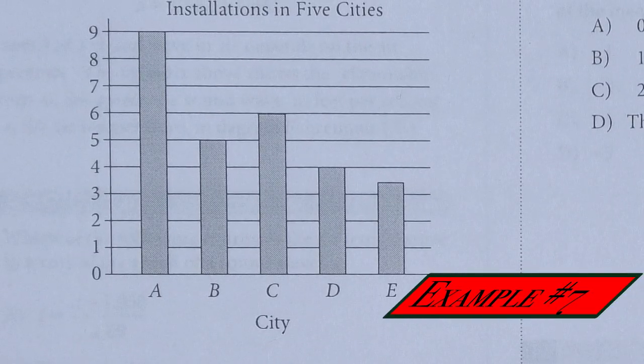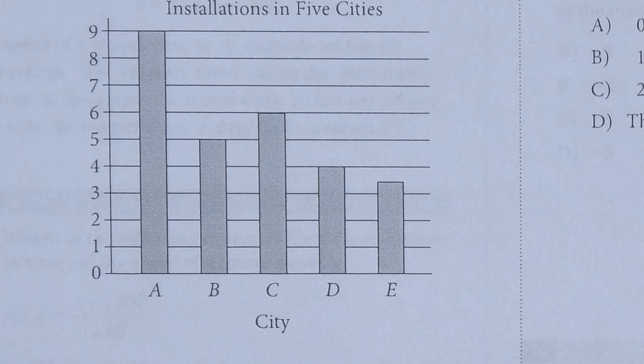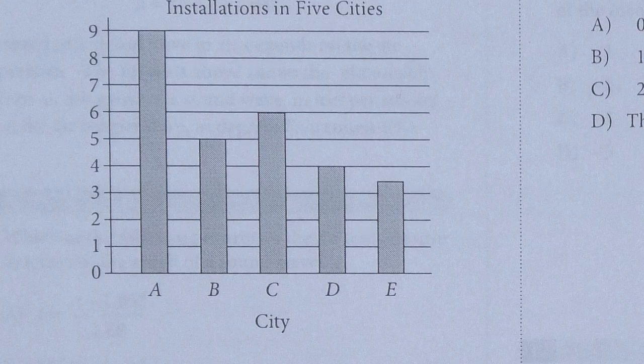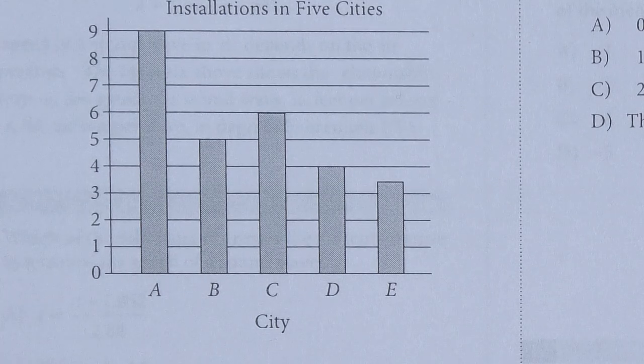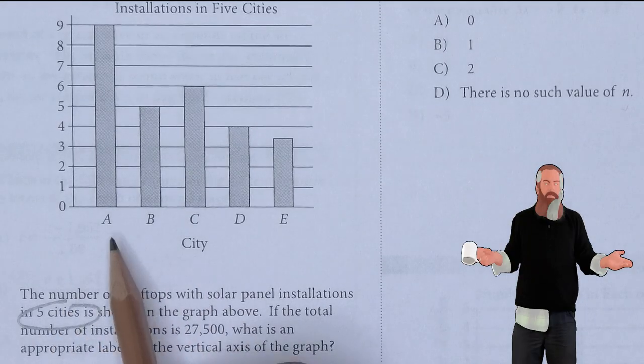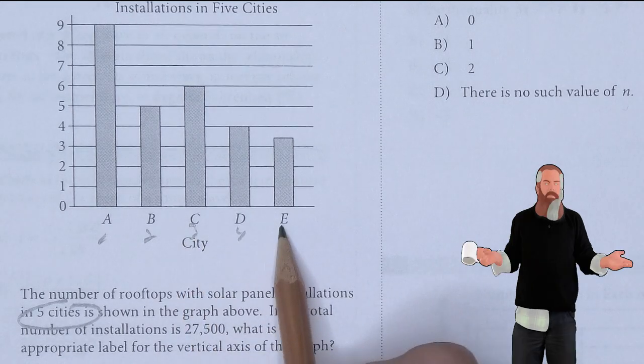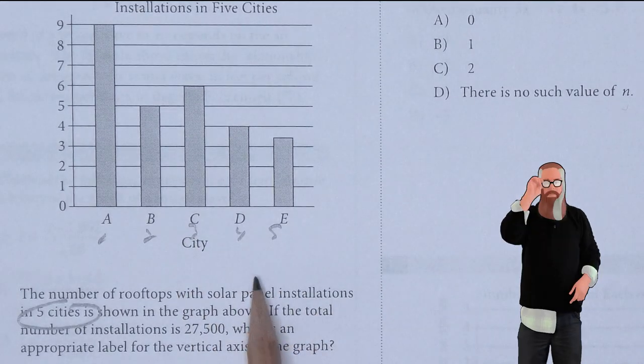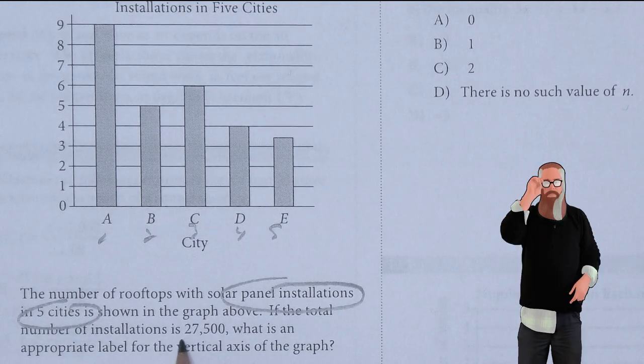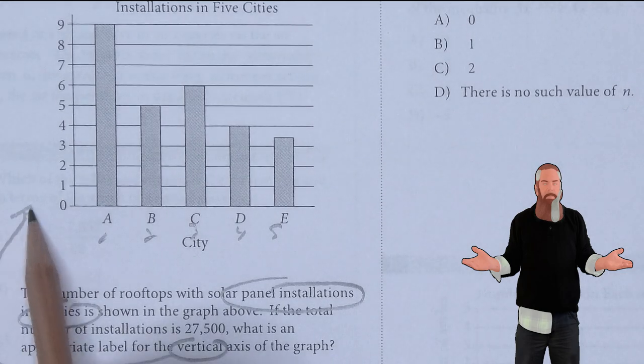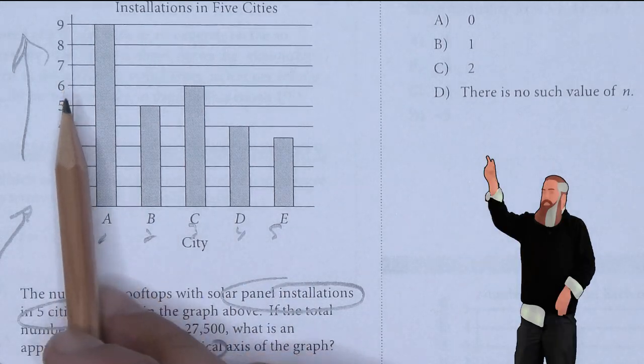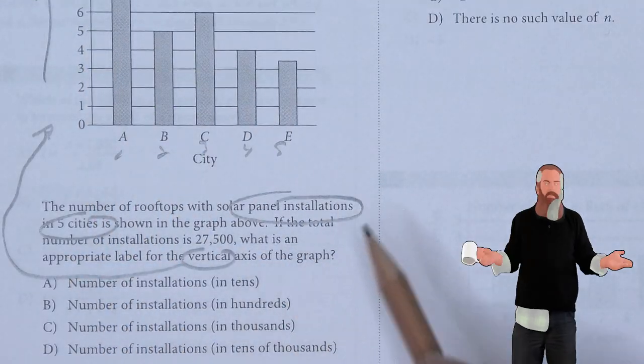The number of rooftops with solar panels installed in five cities is shown in the graph. If the total number of installations is 27,500, what is the approximate label for the vertical axis of the graph? We have five cities and we're asking about panel installations. We're trying to figure out what is the vertical axis. If this is cities, then this is the number of installations, but how are we measuring these?